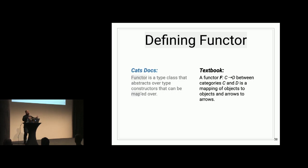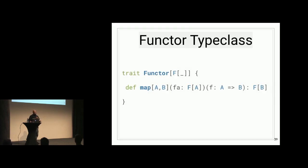So if we define functor in two different places, we can look first at the CATS documentation, where they say it's a type class that abstracts over type constructors that can be mapped over. That's fine. That's actually entirely perfect and concrete for the programming use case. But in the textbook, they actually just call functor the same way that they would call a normal function. It's a function from C to D, where C and D are categories, and you're mapping objects to objects and arrows to arrows. So we've seen this before in the conference so far. The functor type class, it defines this thing called map. I think everybody's familiar with this.